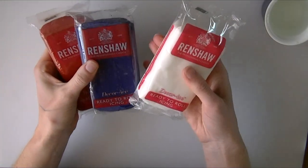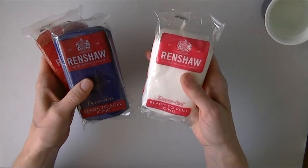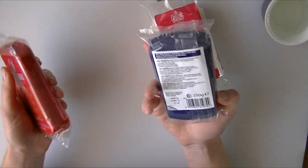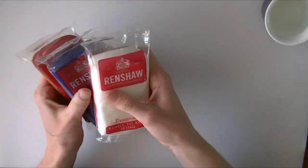I'm going to use some ready colored fondant. It just makes it a little bit easier. I've got some Renshaws here: a white one, a navy blue one, and a ruby red one which I thought were nice for the Union Jack colors.